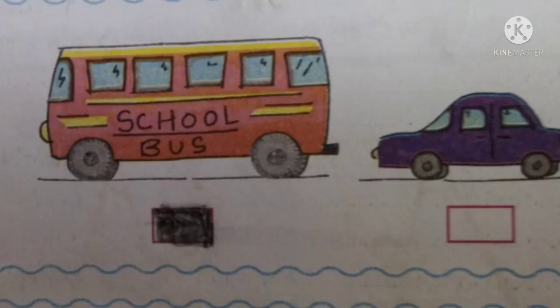The second activity: there are two pictures — the first is a bus and the second is a car. Color the box below the bigger vehicle. Which is bigger? The bus is bigger than the car.